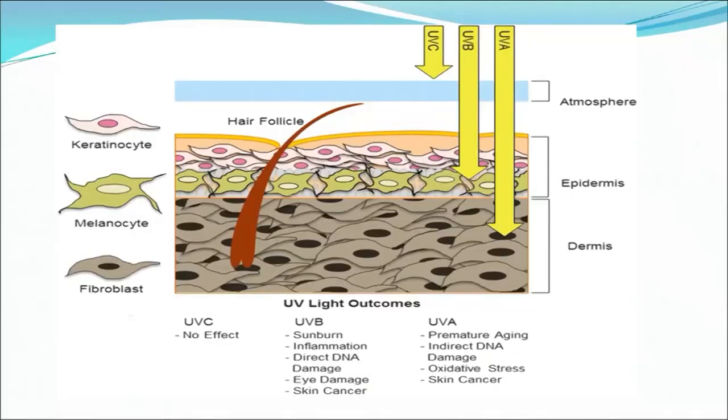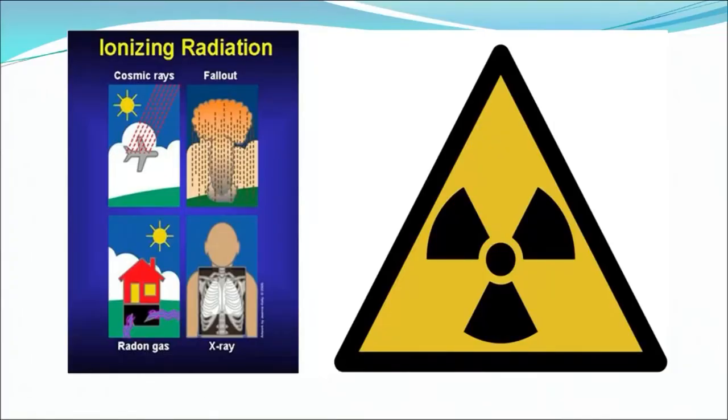Effects of all three types of UV radiation have been shown in the figure. About ionizing radiations and their effects, you have learned in Lesson 10, Module 4 of Environmental Science. Last but not least are the heavy metals present in the environment, which are a real threat to our health. Next, we will discuss heavy metal toxicity.